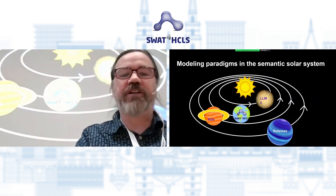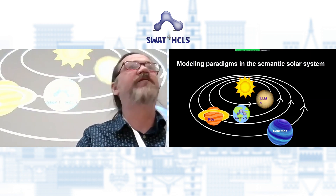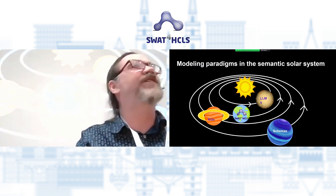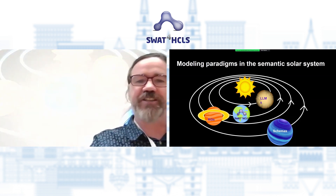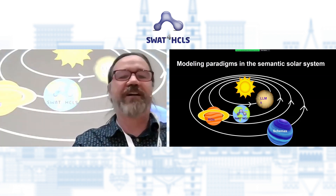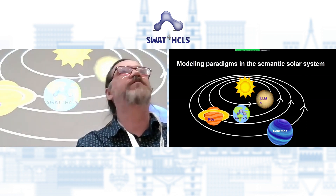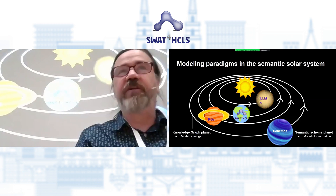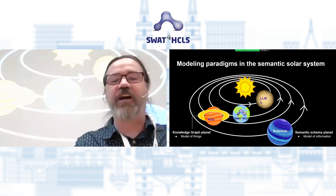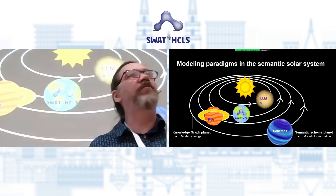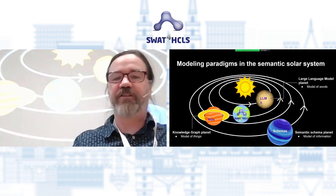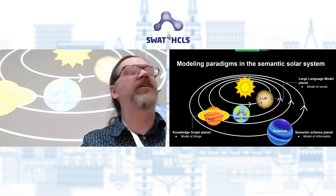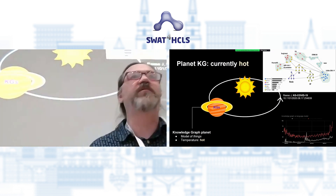I want to take this analogy a little bit further and go on a journey through the semantic solar system. Imagine we're here on planet Earth — SWOT for HCLS — going around the sun, and there are some other semantic modeling planets out here. We have planet knowledge graph, which seeks to model the things that are observed in the world. We've also got planet semantic schema, which seeks to model the information about the things. And also, very much in the news right now, planet large language model, which is more like a model of words. All of these are different ways of approaching the problem of semantic modeling.